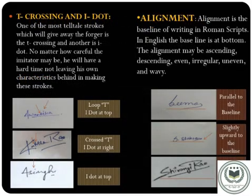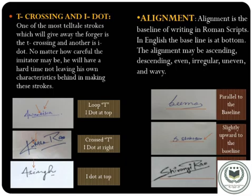The second is T-crossing and I-dot. One of the most tell-tale strokes that gives away a forger is the T-crossing and the I-dot. No matter how careful the imitator may be, they will have a hard time not leaving their own characteristics behind in making these strokes. In the sample picture, the arrow indicates the T-crossing and I-dot of three writers as special strokes and characteristics.